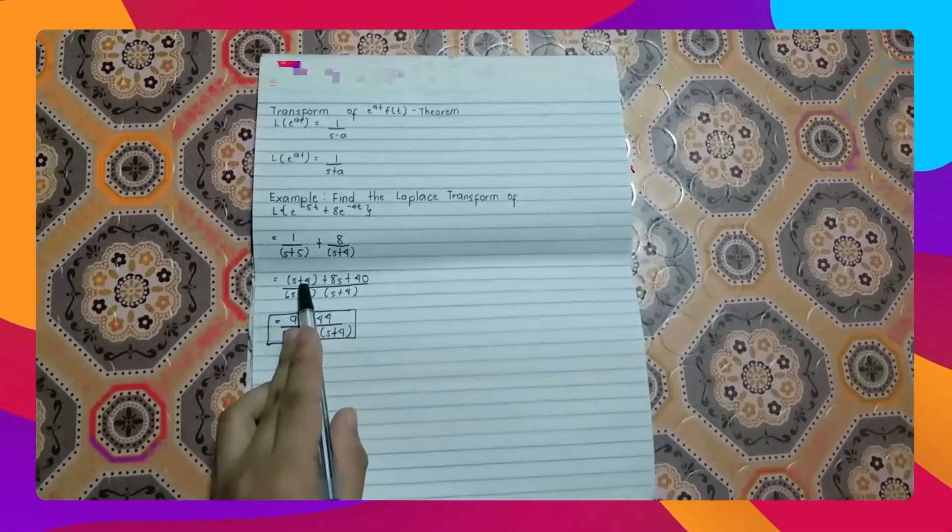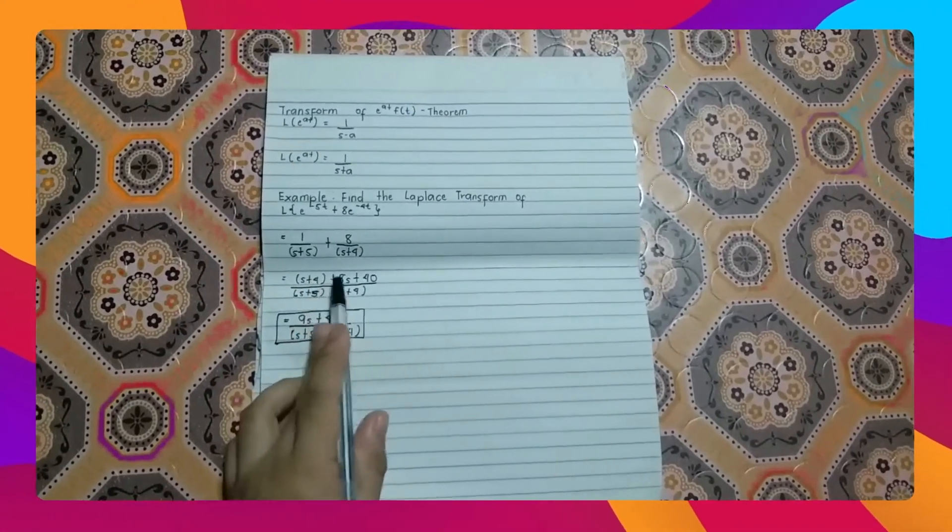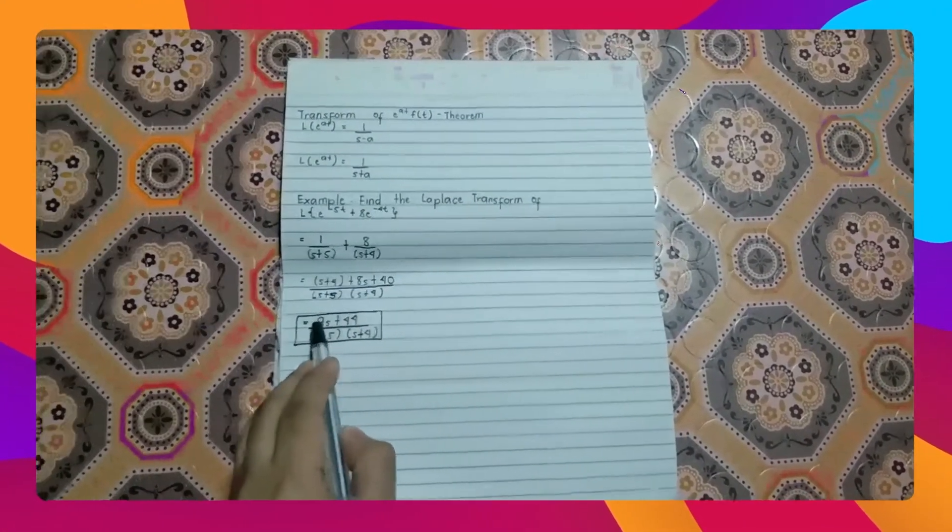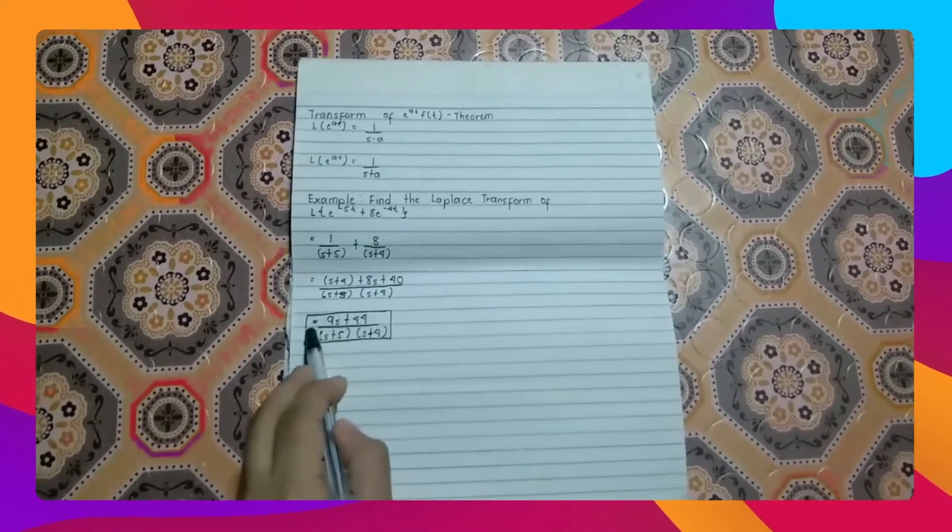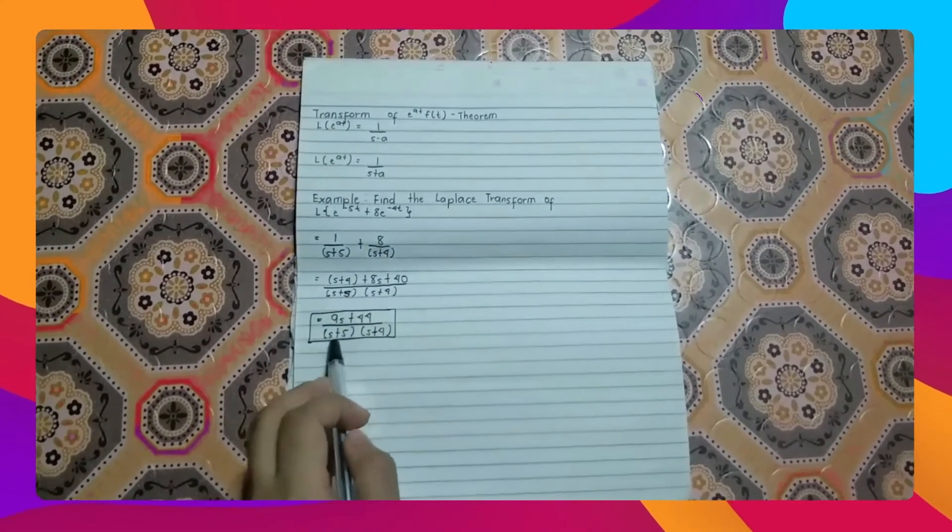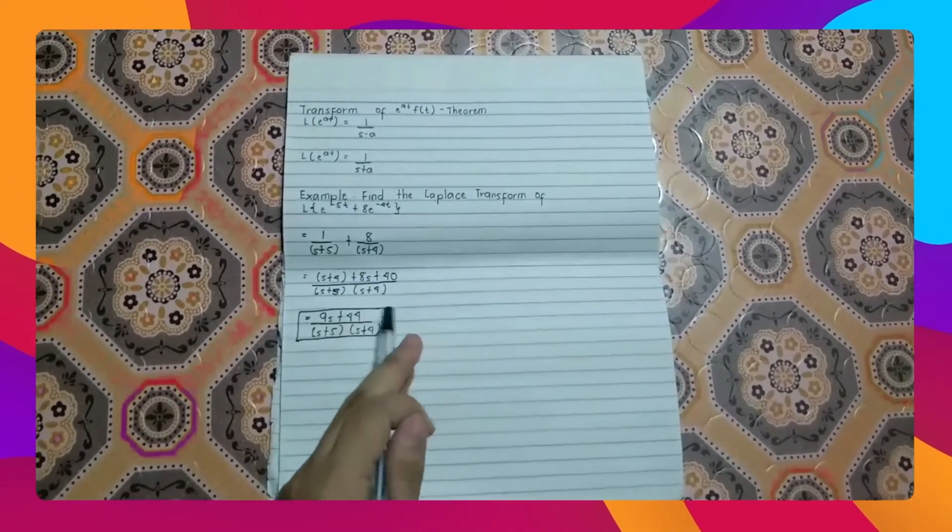We have s plus 8s equals 9s, 4 plus 40 equals 44. Then copy the denominator of s plus 5 times s plus 4. This is our answer.